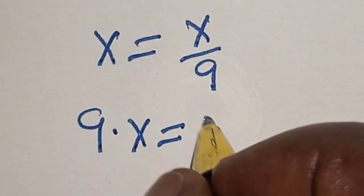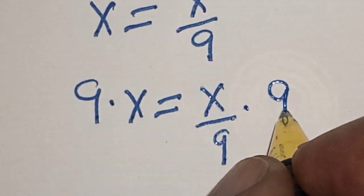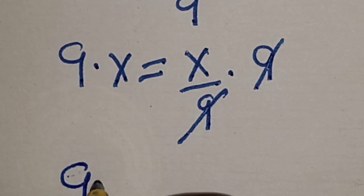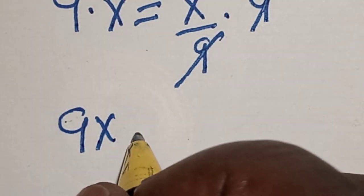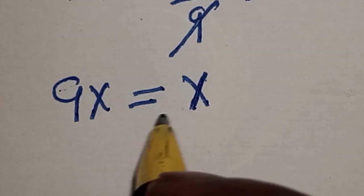Then this will cancel. 9x is equal to x. Then let's bring this x to this side and equate everything to 0.